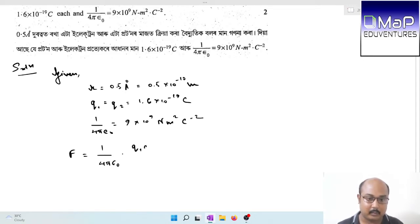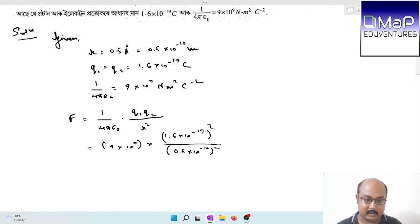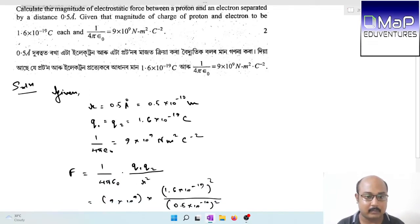The electrostatic force between the two bodies, electron and proton, is F equals 1 by 4 pi epsilon naught times q1 q2 divided by r square. Here I substitute the values. Since q1 and q2 are equal, 1.6 into 10 to the power minus 19 squared. After simplification, the final answer is 9.216 into 10 to the power minus 8 Newton. This is the force between the proton and the electron at distance 0.5 angstrom.